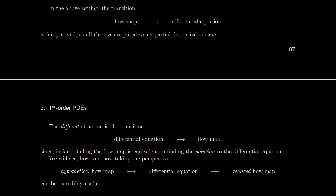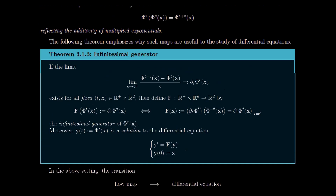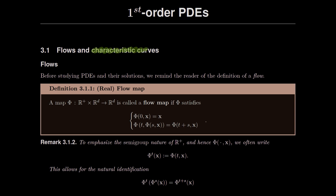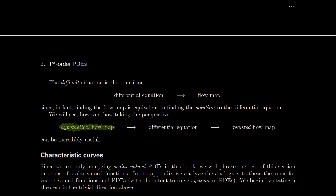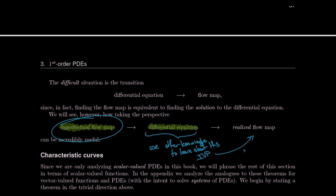With what many call the method of characteristics, we're going to take the perspective of starting with a hypothetical flow map — something we don't actually know — and send it into an IVP. Then we use other knowledge to learn about that IVP. Once we learn about the IVP, we solve it and end up with a realized flow map. That direction is going to be really useful — that's the direction of characteristic curves.